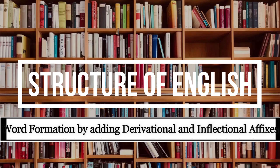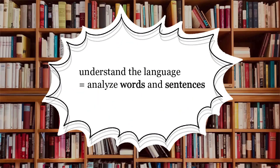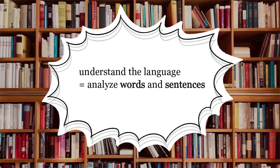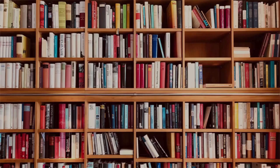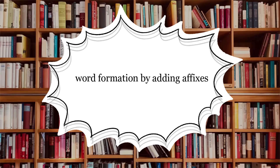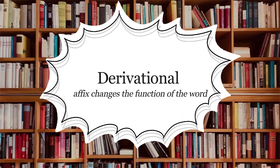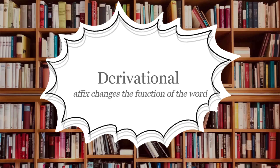Welcome to Structure of English. To learn about the structure of English, you need to understand the language through analyzing its words and sentences. Let us start from word formation — word formation by adding affixes. There are two ways of forming words by adding affixes. The first is derivational. It is called derivational when you add an affix to a word and the word changes from one kind to another, or its function changes.